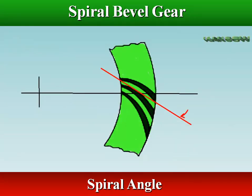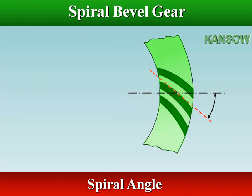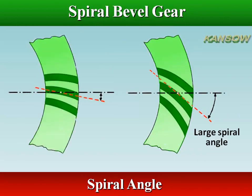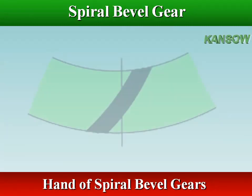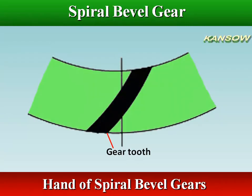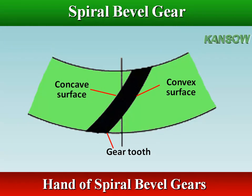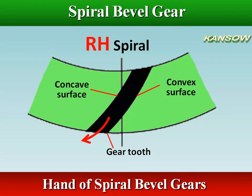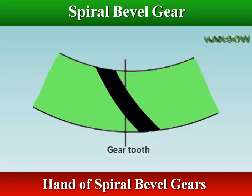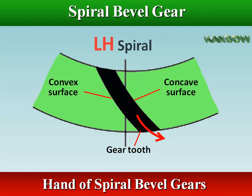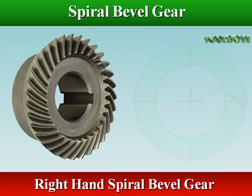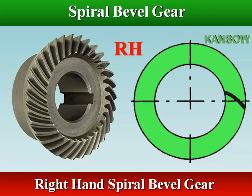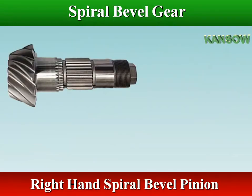The spiral angle is the inclination angle of the curved tooth tangent to the radius vector from the intersection point of pinion and gear axis. The hand of the spiral on spiral bevel gears is indicated by the direction in which the teeth curve away from the axis. Right hand spiral bevel teeth curve away from the axis in a clockwise direction when an observer looks at the face of the gear.